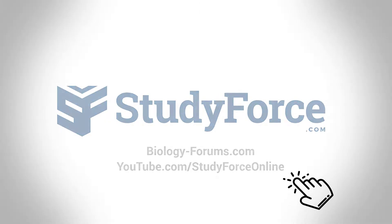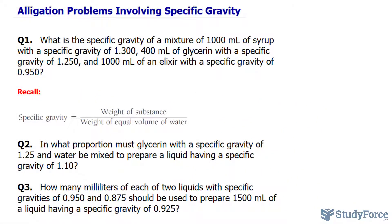In this lesson, we'll go through three alligation problems involving specific gravity. In previous videos, we learned that specific gravity is a ratio that compares the weight of a substance to weight of equal volume of water. So keep that in mind as we go through these problems.